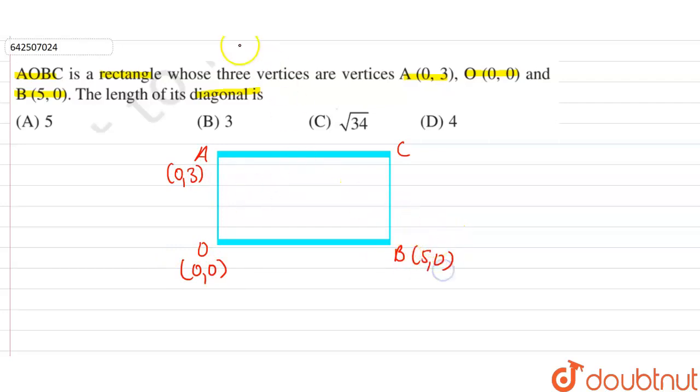So we have to find the diagonal, or the length of the diagonal. The length of the diagonal will be equal to the distance between A and B units. The length of the diagonal will be equal to the distance between point A and B.